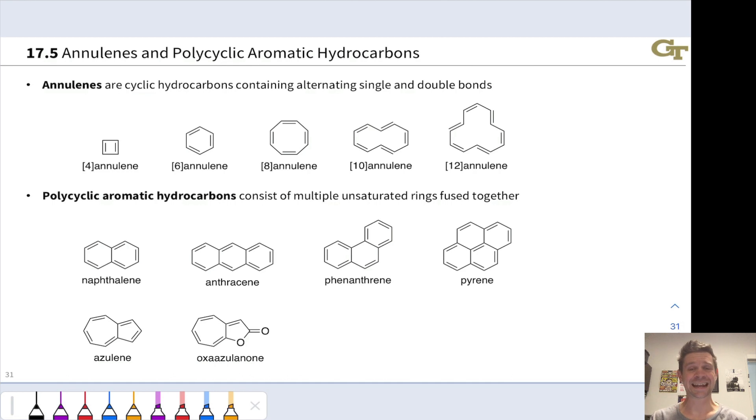For example, 10-annulene is just a fully conjugated cyclic hydrocarbon with 10 carbons in it with alternating single and double bonds. If we count the carbons around the ring here, we see that there are indeed 10 carbons. These can have cis-trans or EZ issues as well, particularly in these larger ring sizes where double bonds can be either cis or trans.